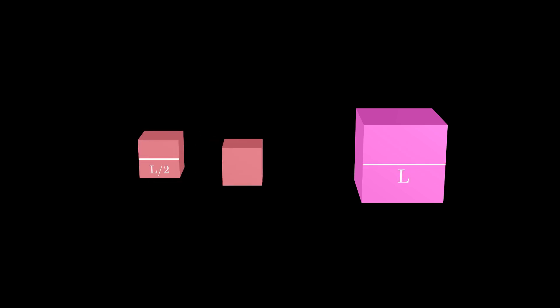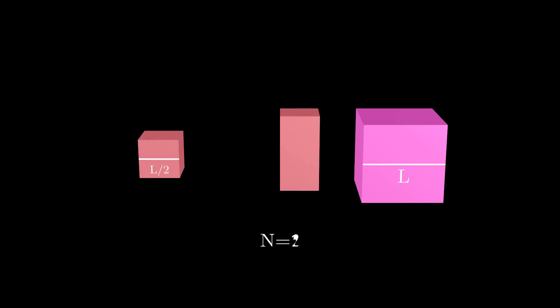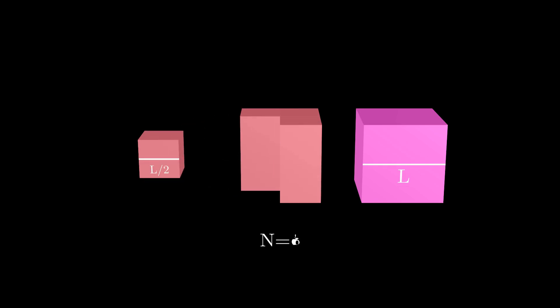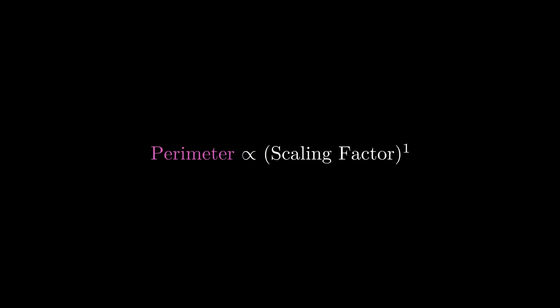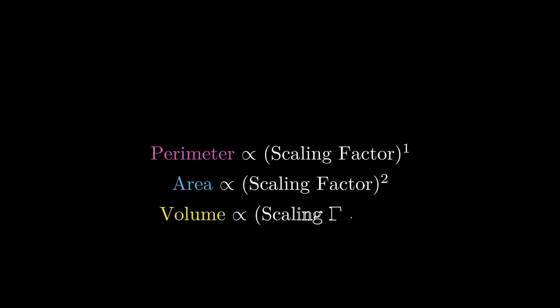Moving on to cubes or spheres, their volume would become one-eighth of its initial volume upon scaling their edges or radii by a factor of half, and the surface areas of these shapes would reduce to one-fourth of their original value. To reiterate, for these aforementioned shapes, scaling them with a scaling factor S scales their periphery by S raised to the power 1, area by S raised to the power 2, and volume by S raised to the power 3.